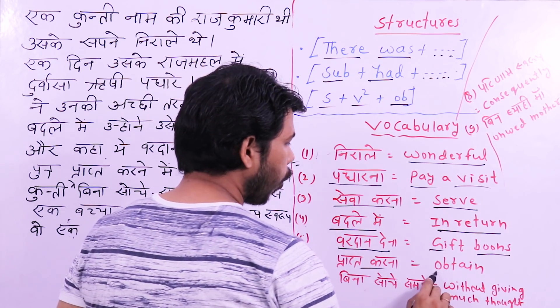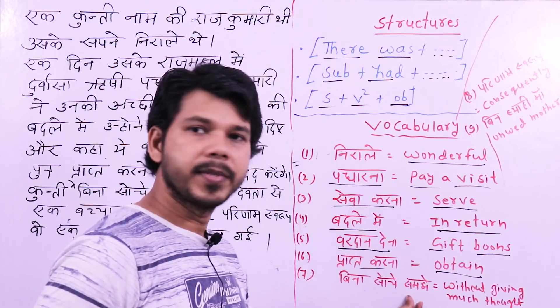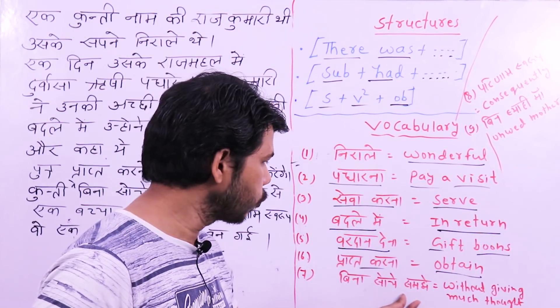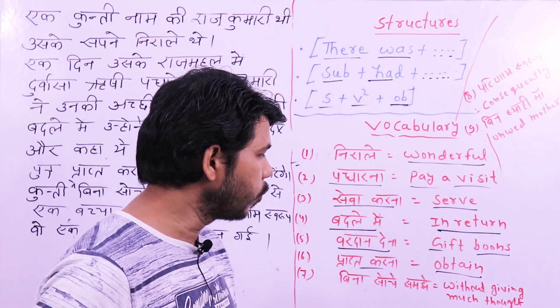प्राप्त करना — to obtain. If you don't understand, let me write it here. बिना सोचे समझे — 'without giving much thought.' Without giving much thought — that's the meaning. Then परिणामस्वरूप — this means 'consequently.' And बिन ब्याही माँ — this means 'unwed mother.' Unwed — जिसकी शादी न हुई हो — unwed mother.